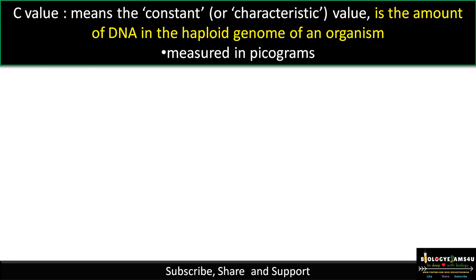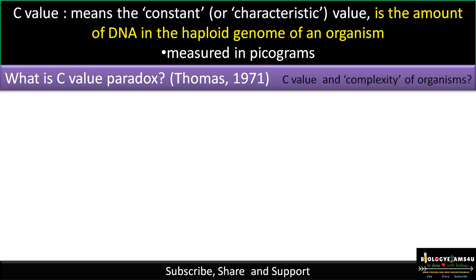Simply, it is the genome size of an organism. What is C value paradox? The term was introduced by Thomas in 1971. Is there any relationship between genome size or C value and the complexity of an organism? Let's take some examples to understand the concept.